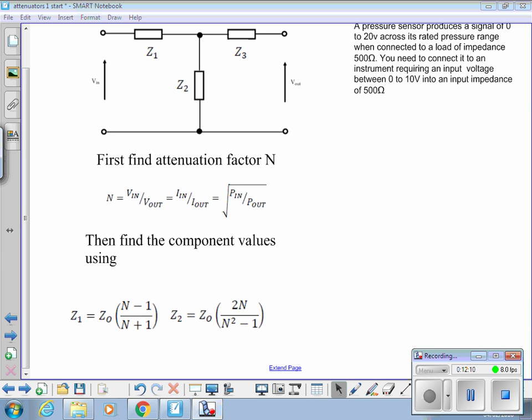Z1. That should read Z1 and Z3 because it's symmetrical. Those two resistors will be the same value, and then Z2 using that formula. So have a go now and see if you can get values for those particular components.